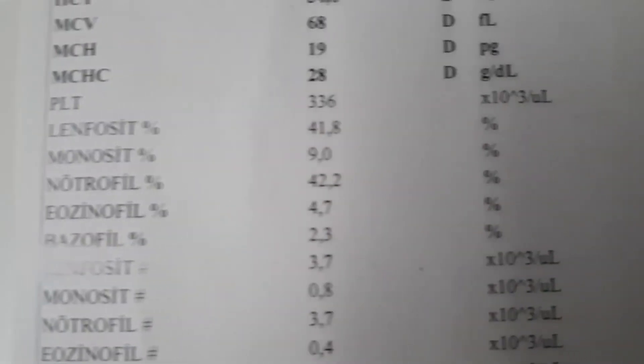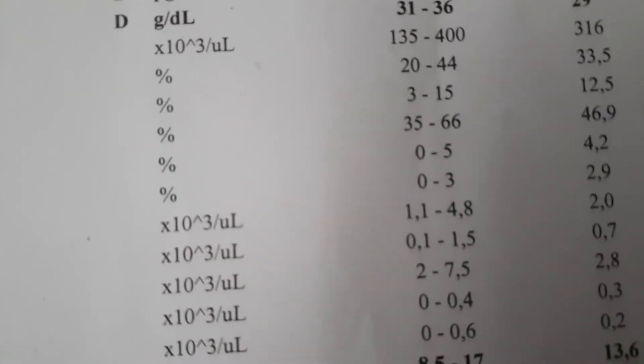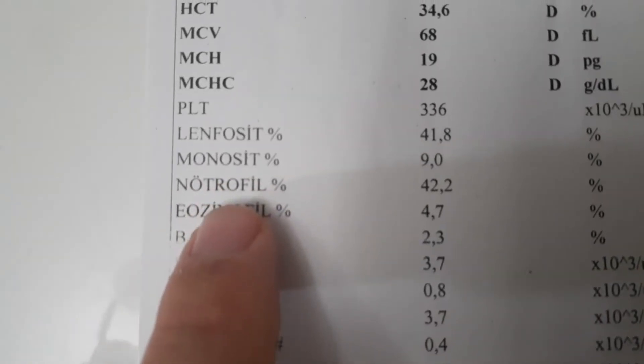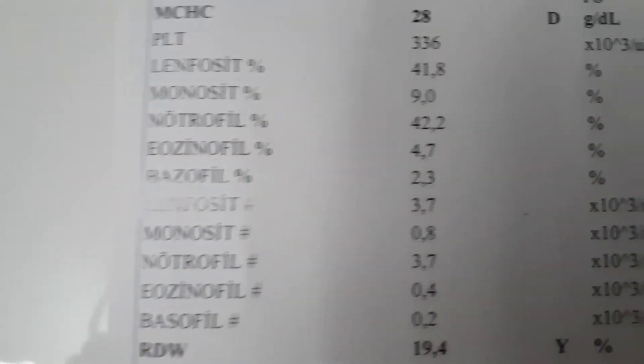Low neutrophil count means weakened immunity. It can result from chemotherapy drugs, bone marrow failures, extreme anemia, febrile neutropenia, congenital bone marrow disorders, viruses such as hepatitis A, B, C, HIV, sepsis, autoimmune diseases like rheumatoid arthritis, leukemias, and myelodysplastic syndromes of the bone marrow.